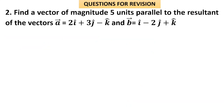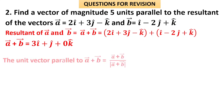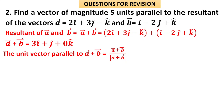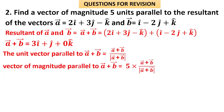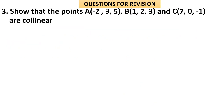Question 2: Find a vector of magnitude 5 units parallel to the resultant of vectors a and b. The resultant is a + b. Adding the components: (2+1)=3 for i, (3−2)=1 for j, (−1+1)=0 for k, giving 3i + j. The unit vector parallel to a + b is (3i + j) / |a + b| = (3i + j) / √10. A vector of magnitude 5 parallel to a + b is 5 × (3i + j) / √10 = (15i + 3j) / √10.